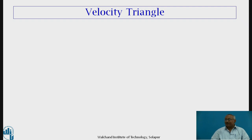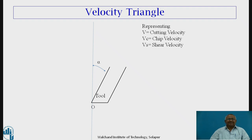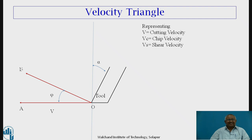First of all, we draw a vertical line, and then a tool face making an angle alpha — that is rake angle — with the vertical line. From the tool point, we draw a line with proper scale to represent cutting velocity V, with proper magnitude. This line is named OA, which represents cutting velocity. The next line will represent shear velocity, drawn at shear angle, and that will be represented by OB.